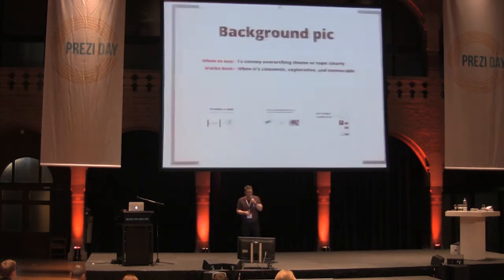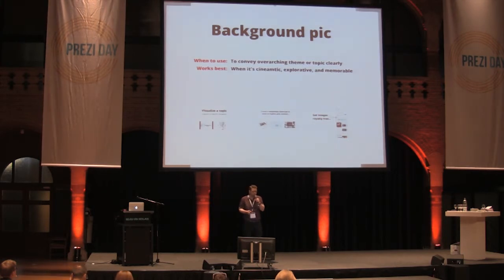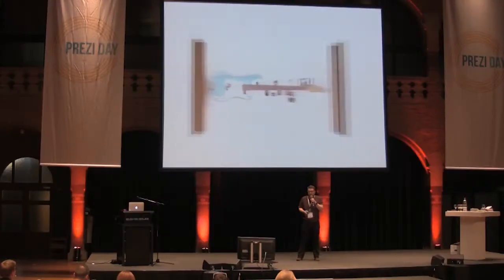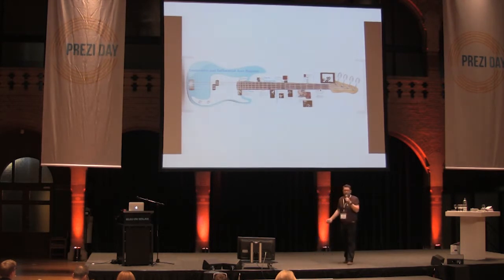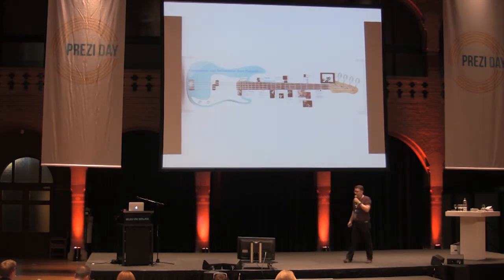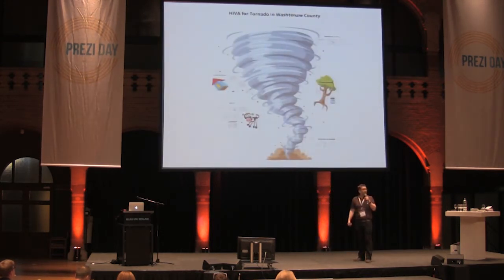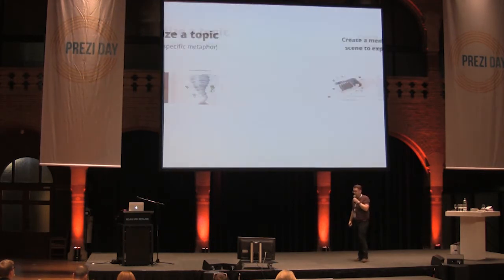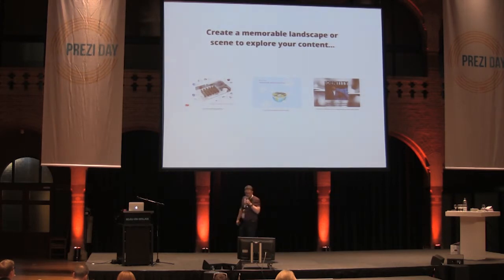A lot of people use background pictures — these are the most popular way to make your overview squintable. We've got some great ways to visualize a topic, and sometimes it's all you need. Look at that — you know exactly what it's about, it's about music, jazz players throughout history. Look at that — you know it's about tornadoes. Simple stuff, just a nice background picture. These are some of our own experts who have made fantastic presentations.